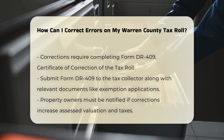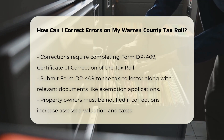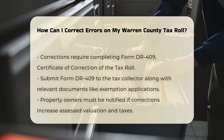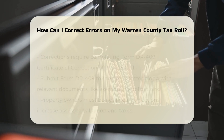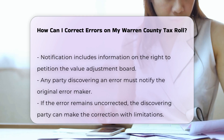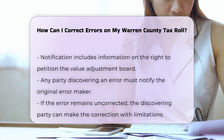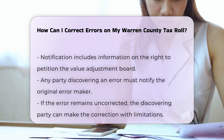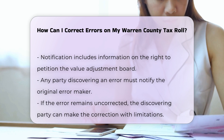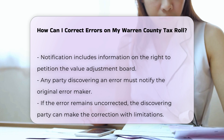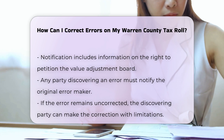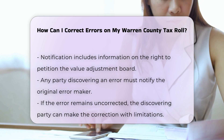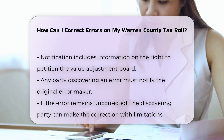Notification and appeals: if the correction increases the assessed valuation and subsequently the taxes, the property owner must be notified with a proposed tax notice. This notice includes the right of the property owner to petition the value adjustment board.